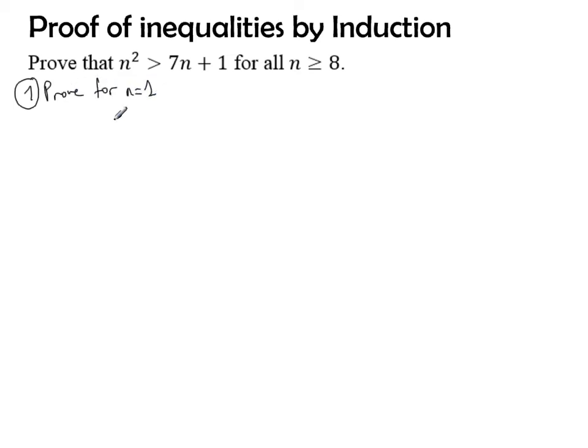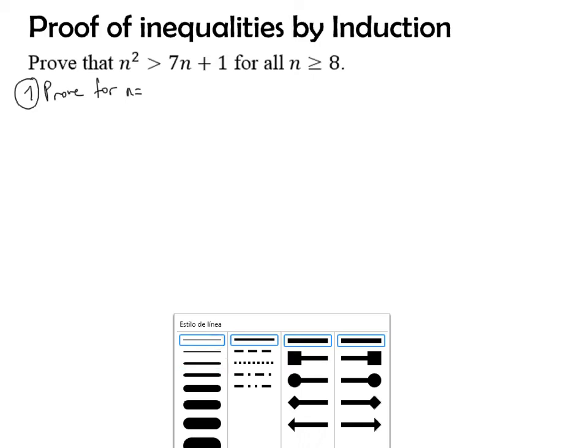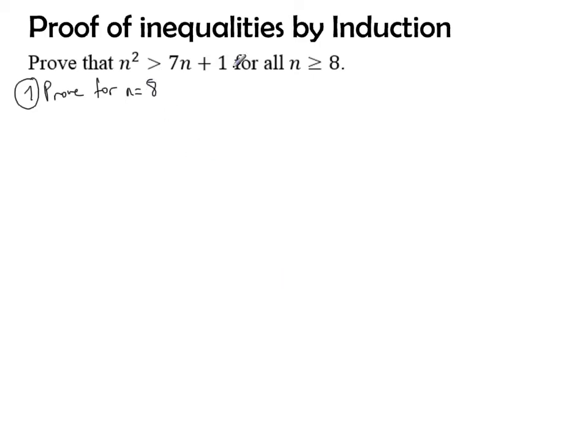n² must be bigger than 7n + 1. I'm going to prove it for n equals 8, because that is the lowest value I'm going to have. It doesn't make sense to prove it for anything else, because that's my condition.